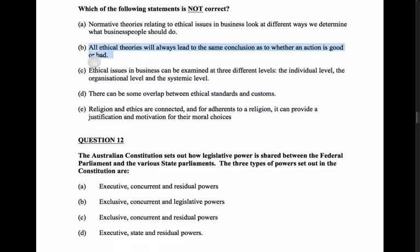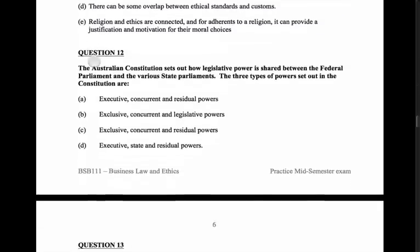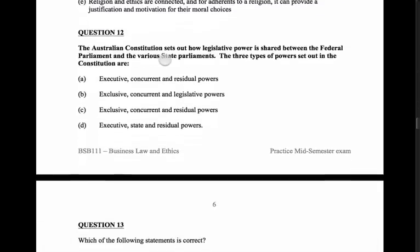Question 12: the Australian Constitution sets out how legislative power is shared between the federal parliament and the various state parliaments. The three types of powers set out in the constitution are... well, I know without even looking at the answers it should be exclusive, concurrent, and residual - and anything else shouldn't be in there.